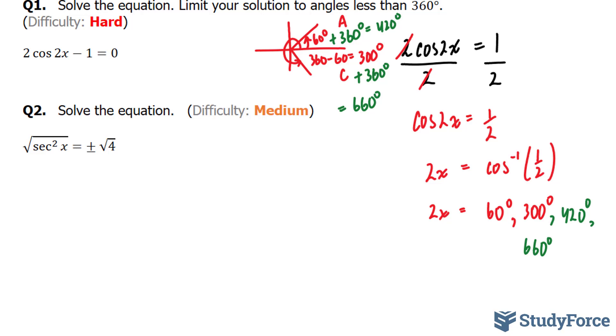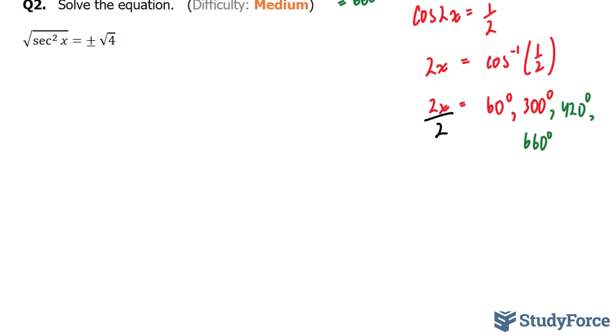That being said, I have to divide each of these numbers by 2. Because dividing this by 2, the left side, I have to do the same thing for all the possible angles on the right side. This becomes 30 degrees. This becomes 150 degrees. This becomes 210 degrees. And lastly, this becomes 330 degrees.